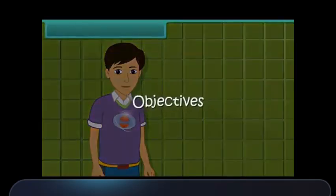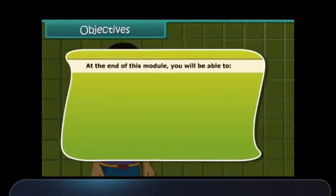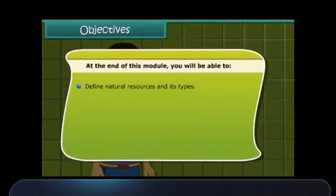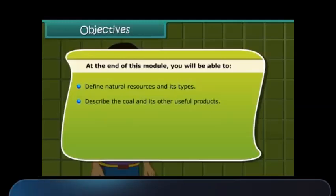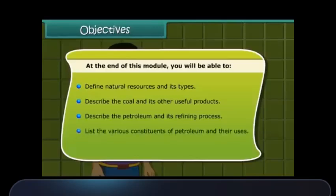Objectives. At the end of this module, you will be able to: define natural resources and its types; describe coal and its other useful products; describe petroleum and its refining process; list the various constituents of petroleum and their uses; and describe natural gas and its importance.